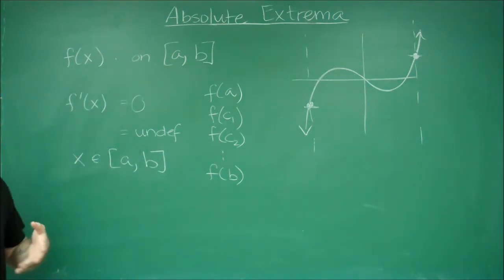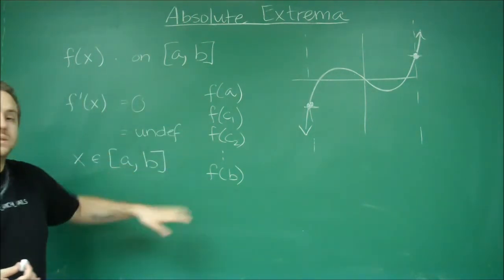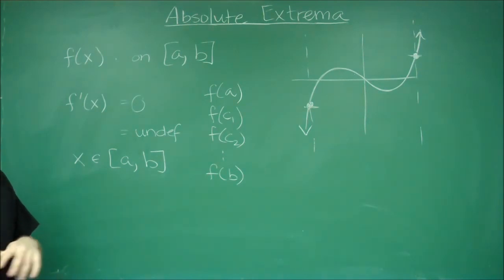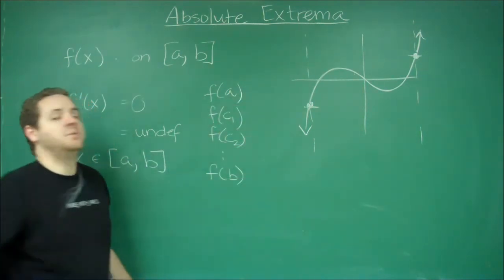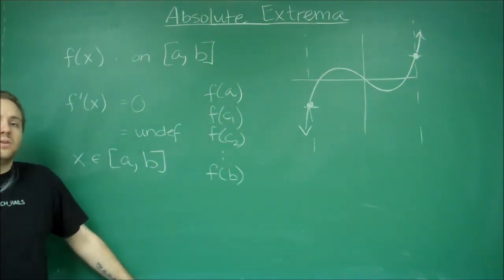So then all you need to do is see, out of this list, what was the highest and what was the lowest. Whatever gave you the highest value, that's your absolute max. Whatever gave you the lowest value, that would be your absolute min.